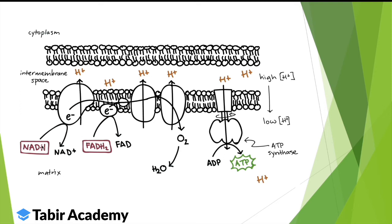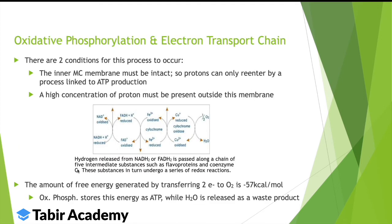The protons come from NADH and FADH2, accumulated largely from the Krebs cycle. Hydrogen is released from NADH or FADH2 through intermediate electron carriers in redox reactions. The free energy generated by one NADH molecule transferring two electrons to oxygen is approximately minus 57 kcal per mole.